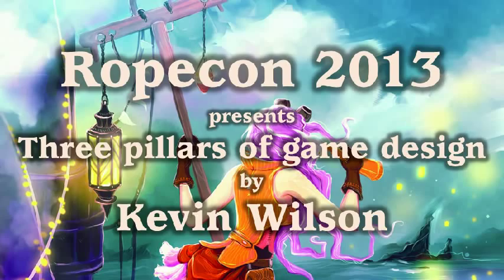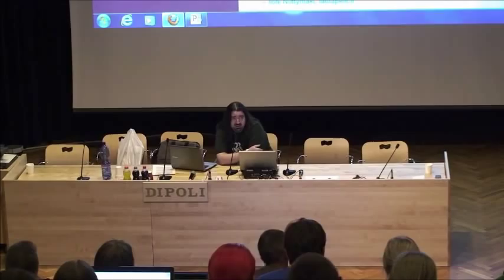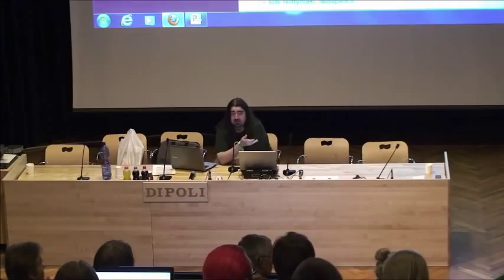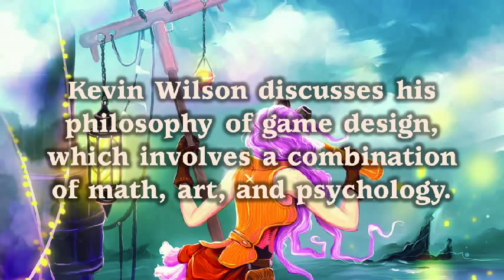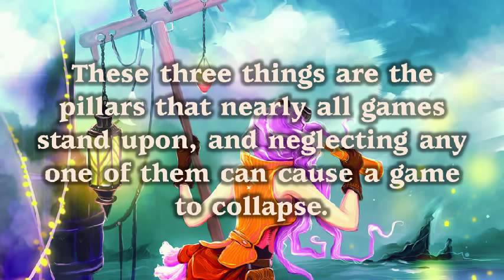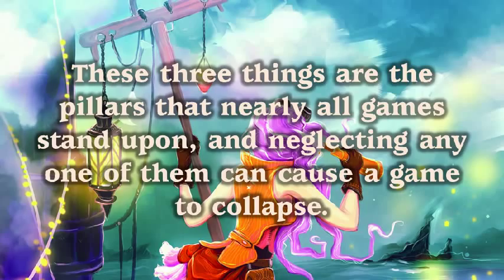My name is Kevin Wilson, and I've been designing board games and role-playing games for about 15 years in the industry. I'm here this morning to talk about what I call my three pillars of game design — the three main elements of any game design that I do, the three things that prop it up. There are three pillars I use as the three supports of any game design: mathematics, art, and psychology. I'll go through each one and explain what I mean.